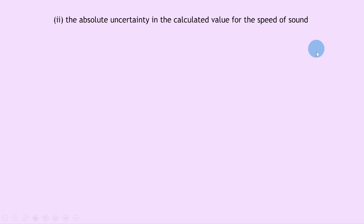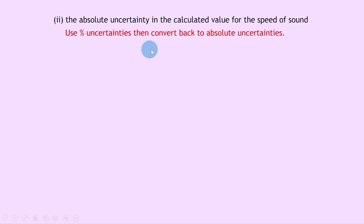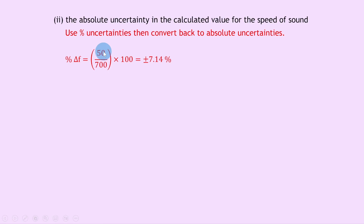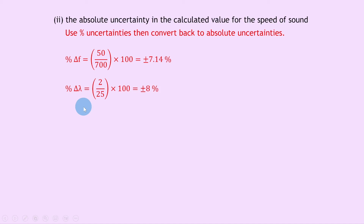Part 2 asks to calculate the absolute uncertainty in the speed of sound. The strategy is to use percentage uncertainties and then convert back to absolute uncertainty. The percentage uncertainty in frequency is 50 divided by 700 times 100, giving ±7.14%. The percentage uncertainty in wavelength is the same as that in the distance between adjacent nodes: 2 divided by 25 times 100, giving ±8%.